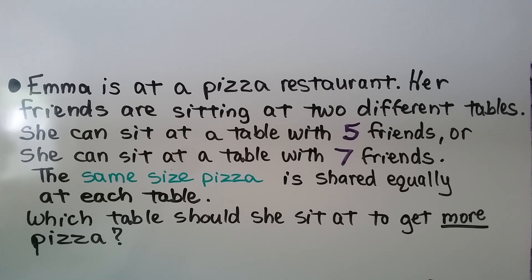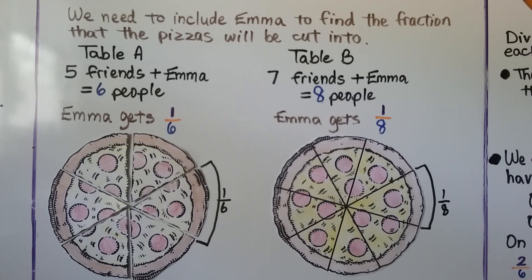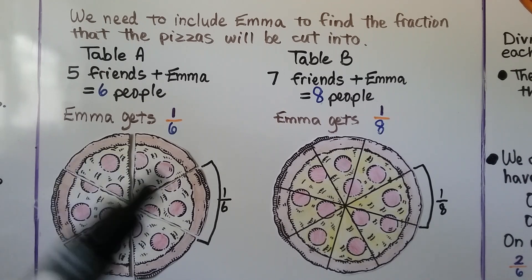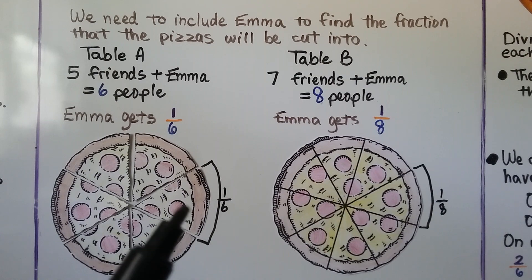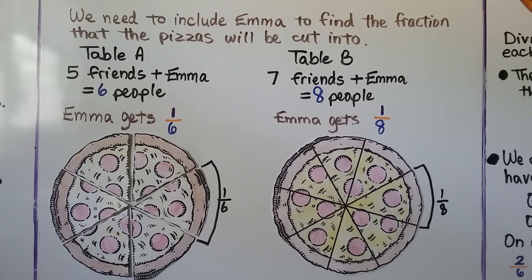Emma is at a pizza restaurant. Her friends are sitting at two different tables. She can sit at a table with five friends or a table with seven friends. The same size pizza is shared equally at each table. Which table should she sit at to get more pizza? We need to include Emma to find the fraction. At table A, there are five friends — add Emma and we have six people, so the pizza is cut into six slices and Emma gets one-sixth. At table B, there are seven friends — add Emma and there are eight people, so Emma will get one-eighth.